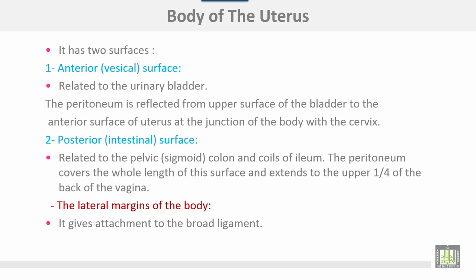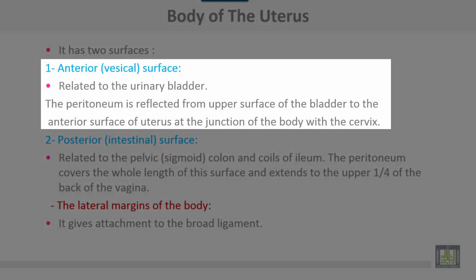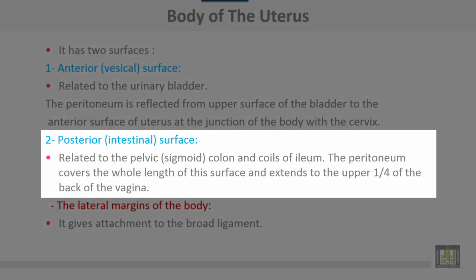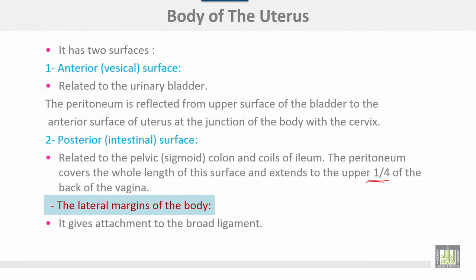The part of the body extending from the level of the tubes to the cervix has two surfaces: the anterior vesical surface and the posterior intestinal surface. The anterior vesical surface is related to the urinary bladder; the peritoneum reflects from the upper surface of the bladder to the anterior surface of the uterus at the junction between the body and cervix. The posterior surface is related to the pelvic colon and coils of the ileum; the peritoneum covers the whole length of this surface and extends down to the upper quarter of the back of the vagina.